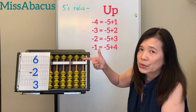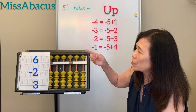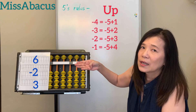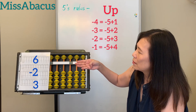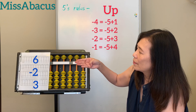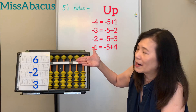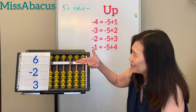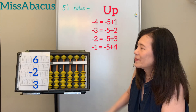Let's do number 10: 6 minus 2. Up 5, plus 3. Then plus 3: use the 5 — plus 5, minus 2. Answer: 7.